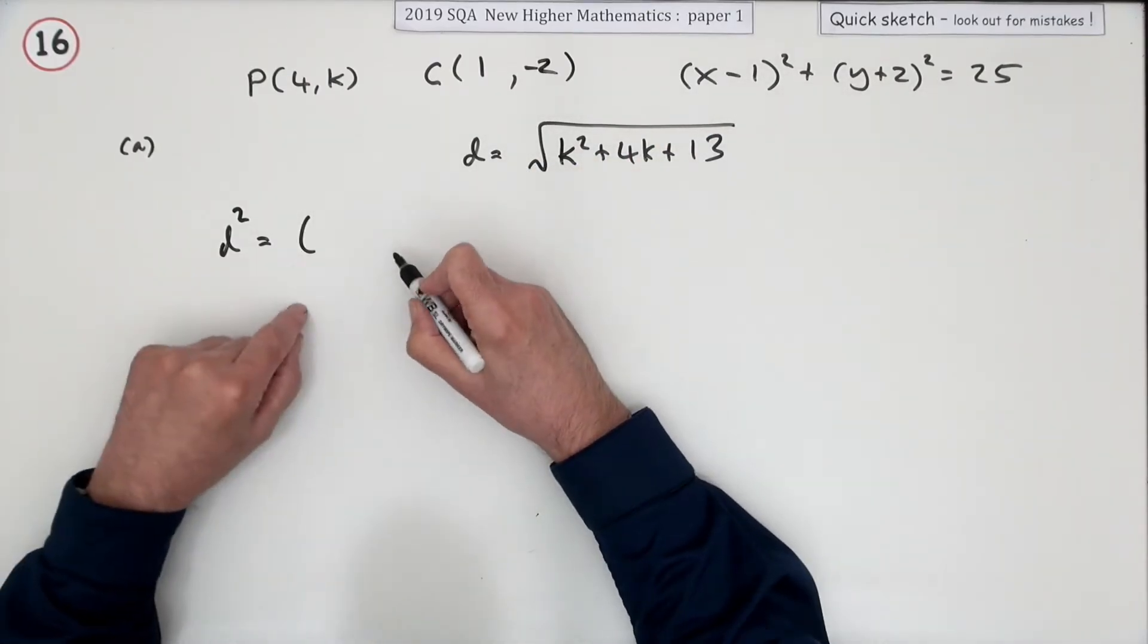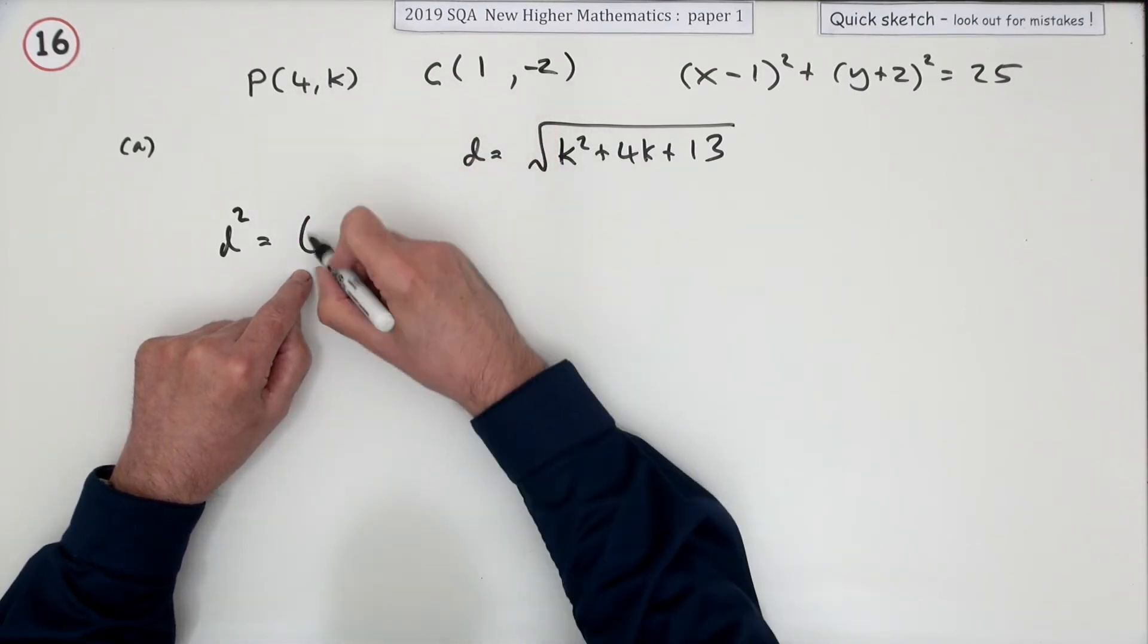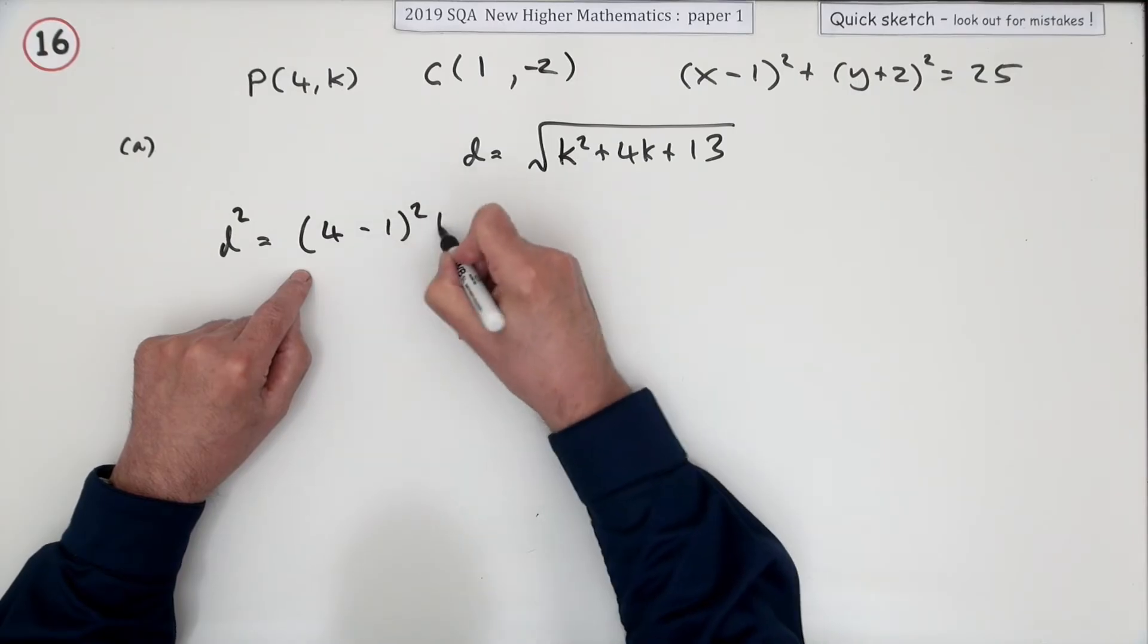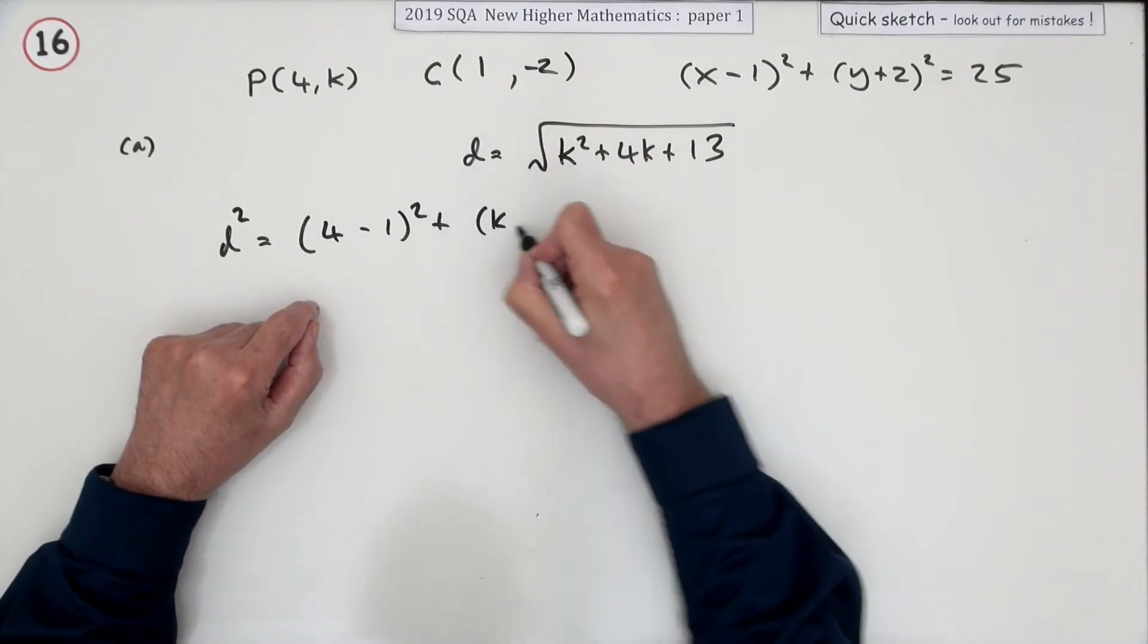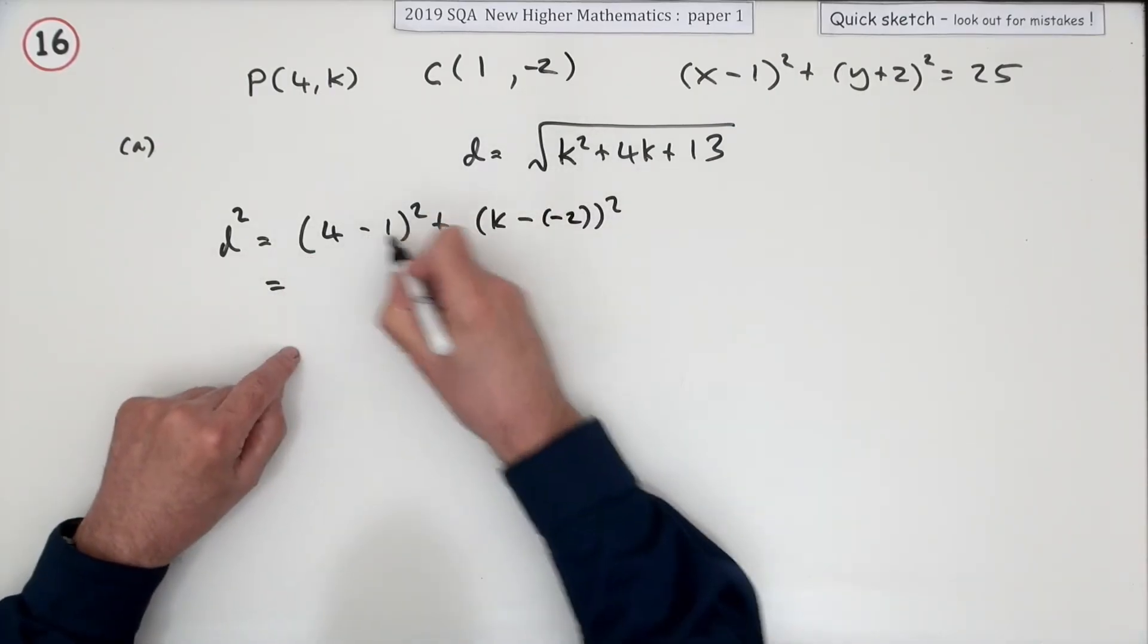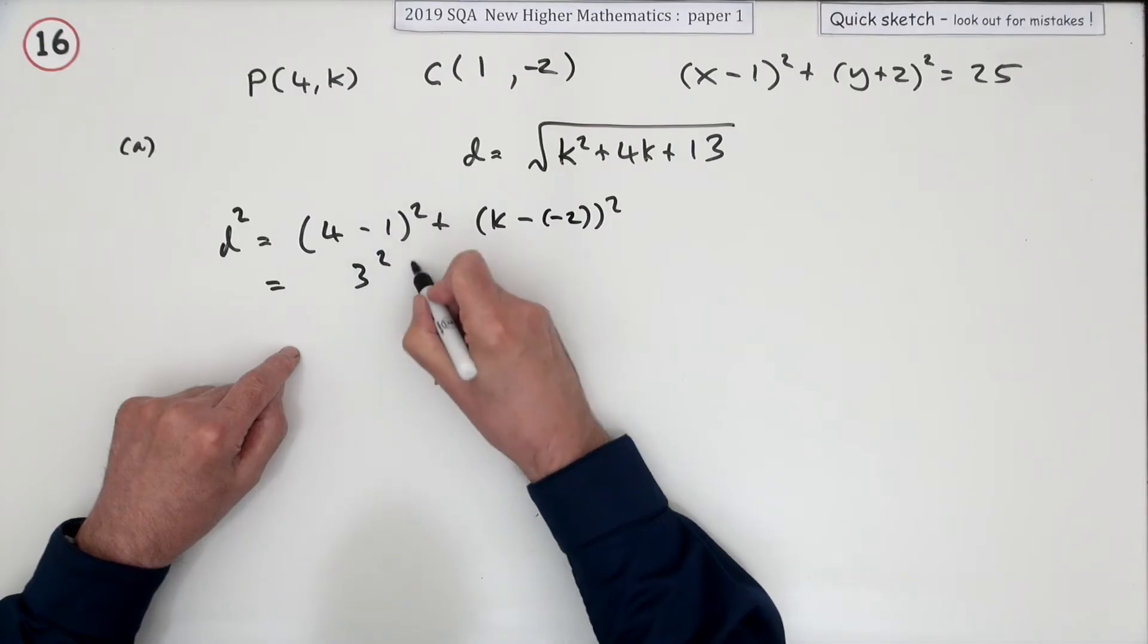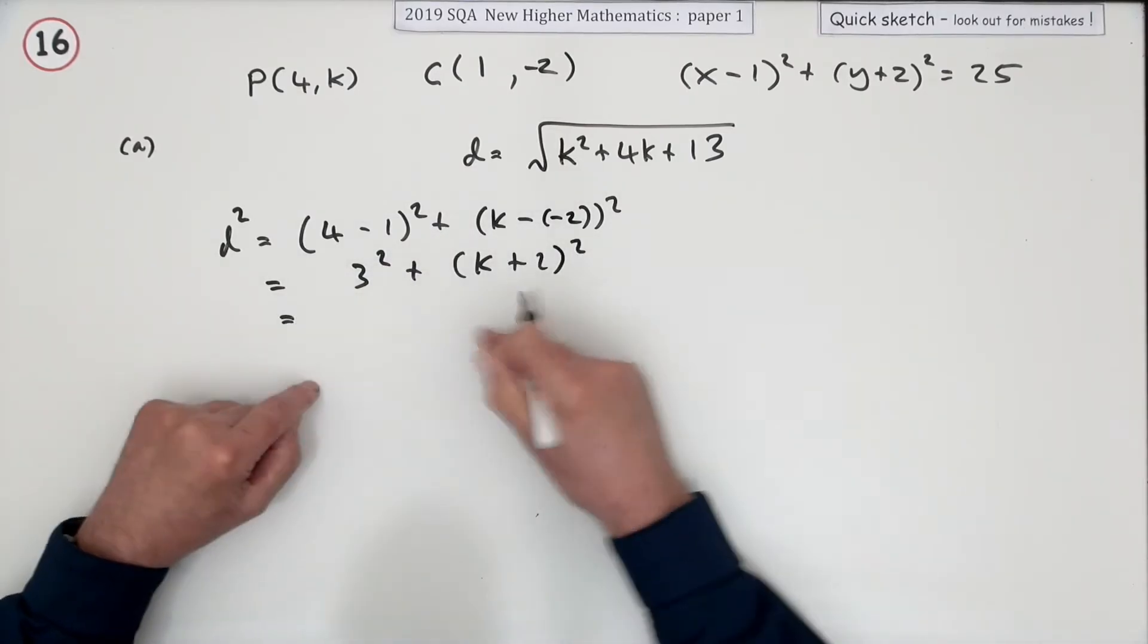big square roots. So it'll be the difference in the x coordinates—the difference in the x coordinates are going to be, I'll start with this one, 4 take away 1, and then the difference in the y coordinates will be K take away negative 2. Expand that, so that's, I'll just tidy up, 3 squared plus (K + 2) squared, which should become that.